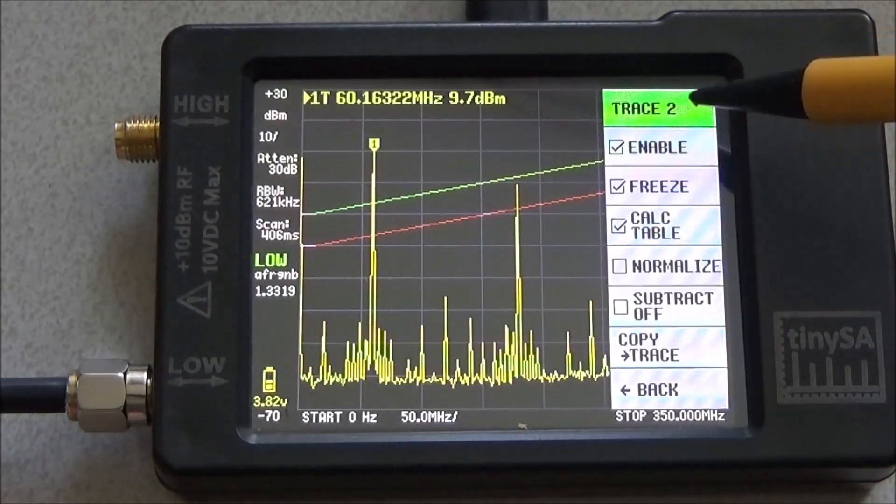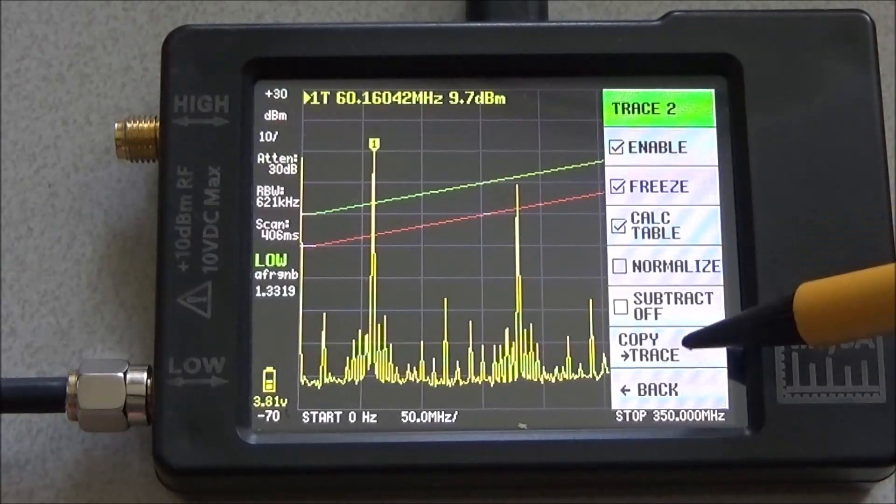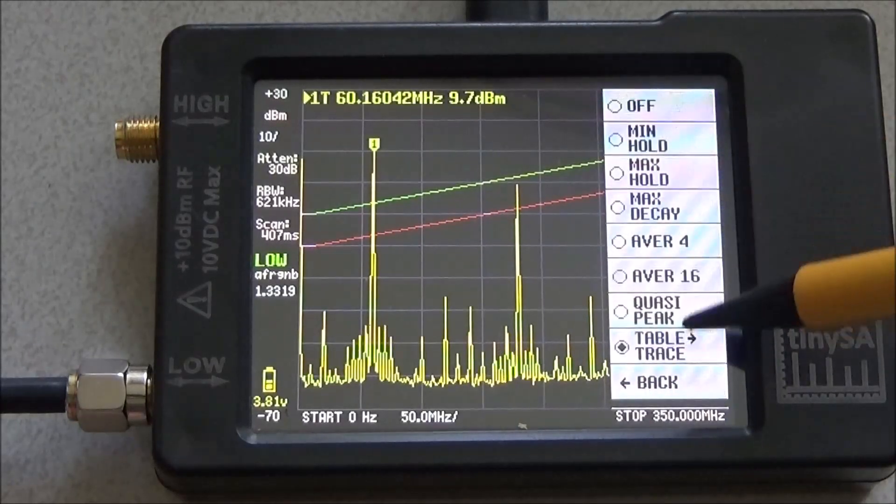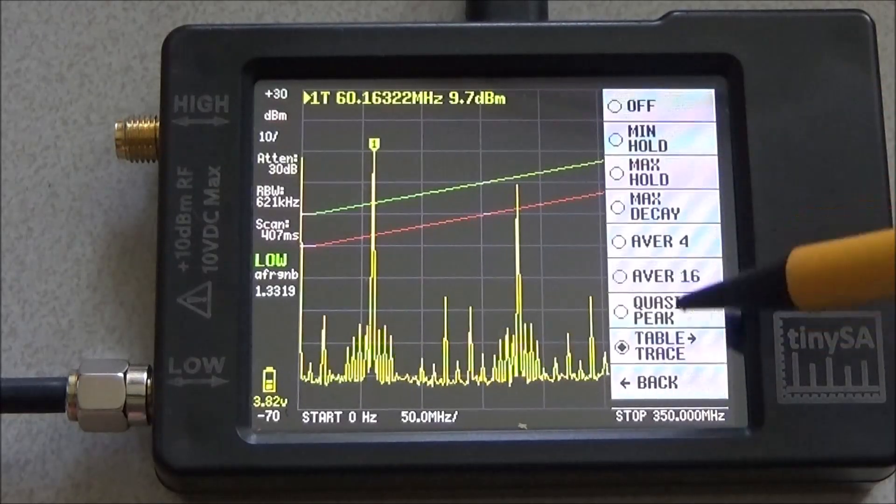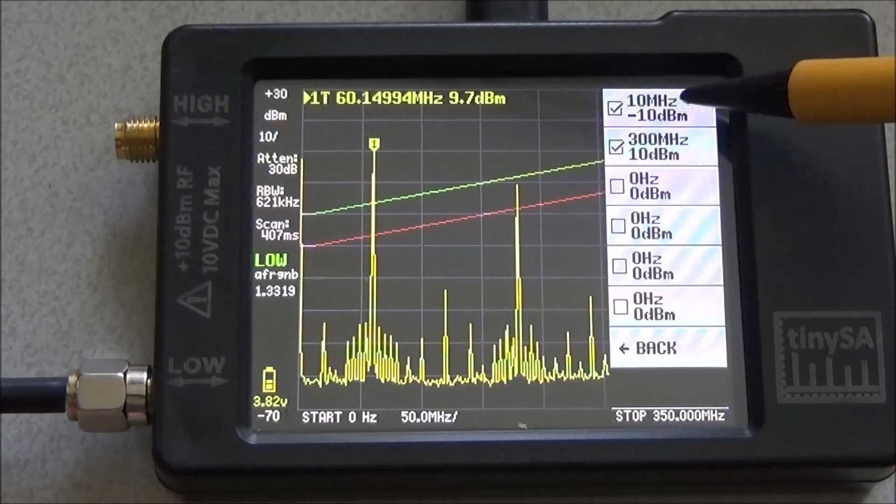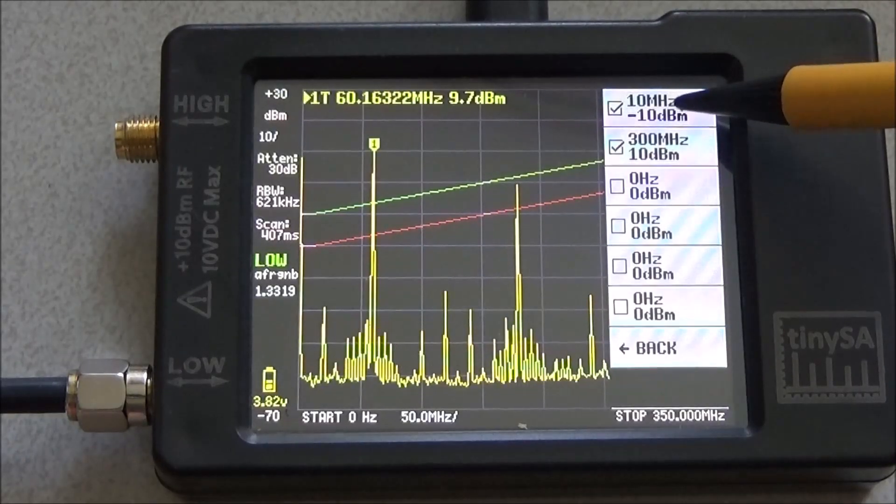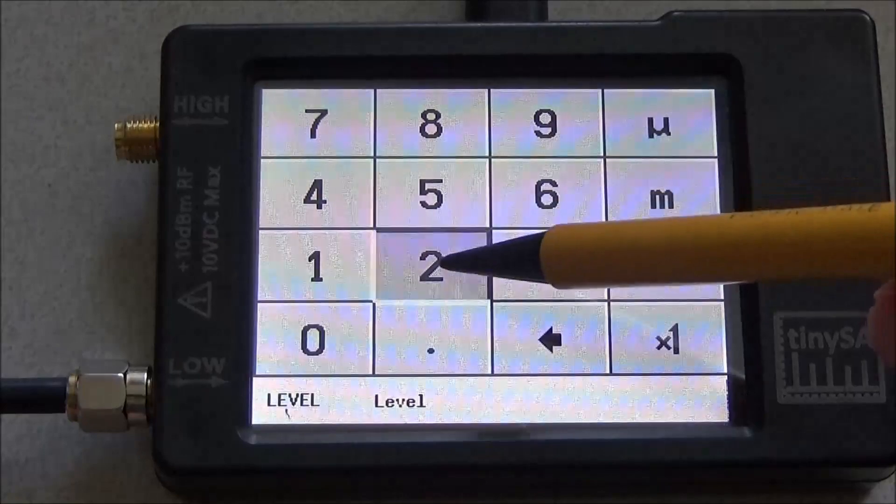Let's say you have an amplifier that has a gain of 20 dB at 10 KHz.